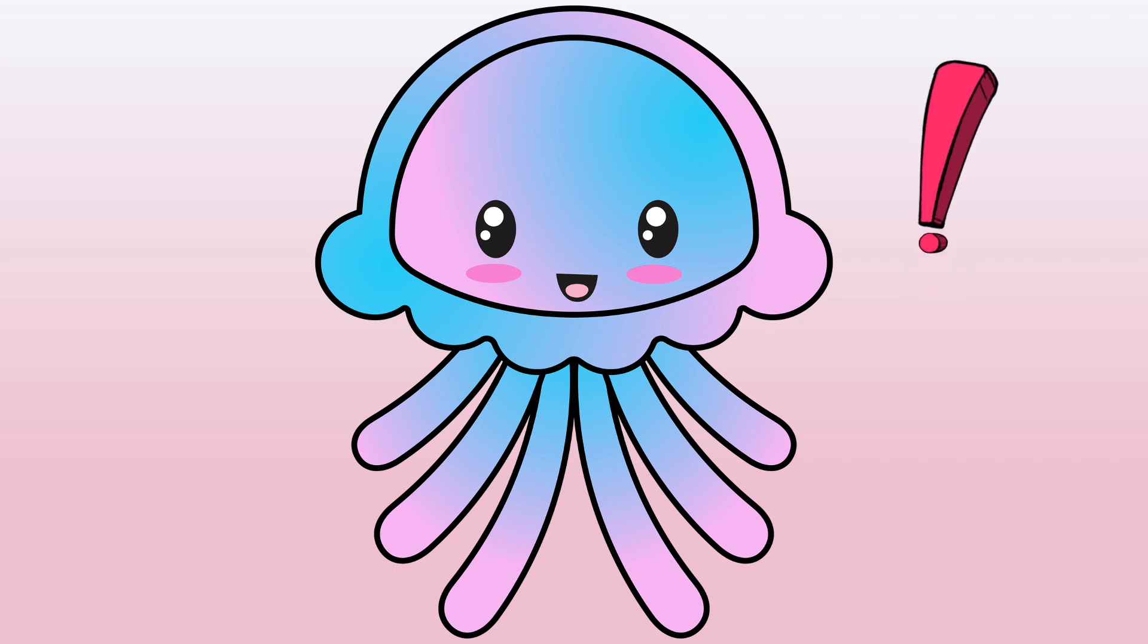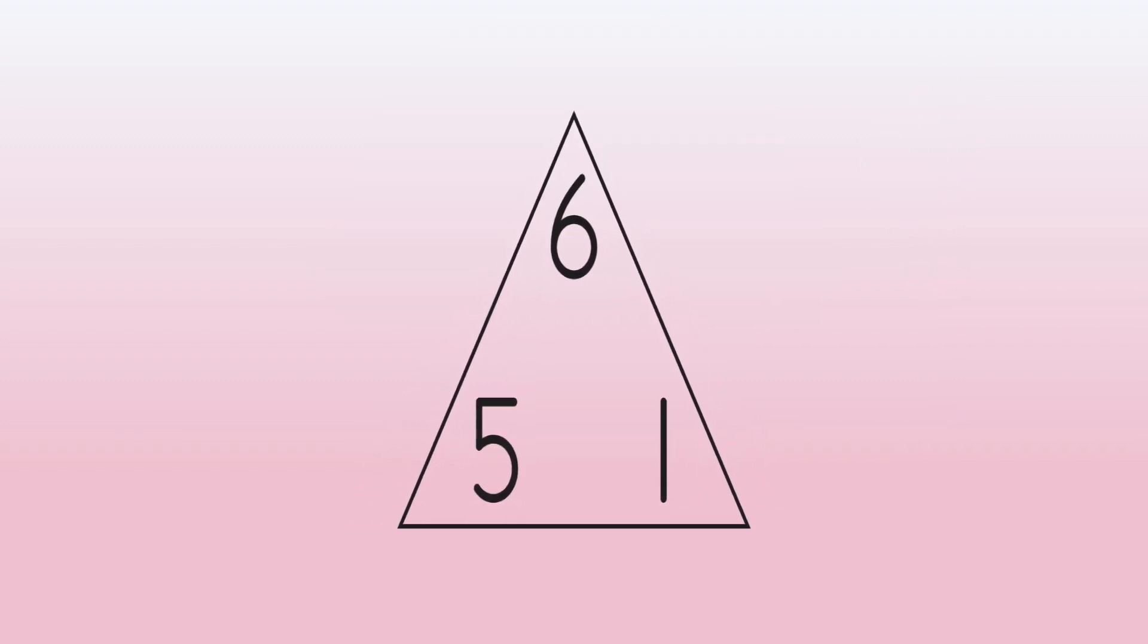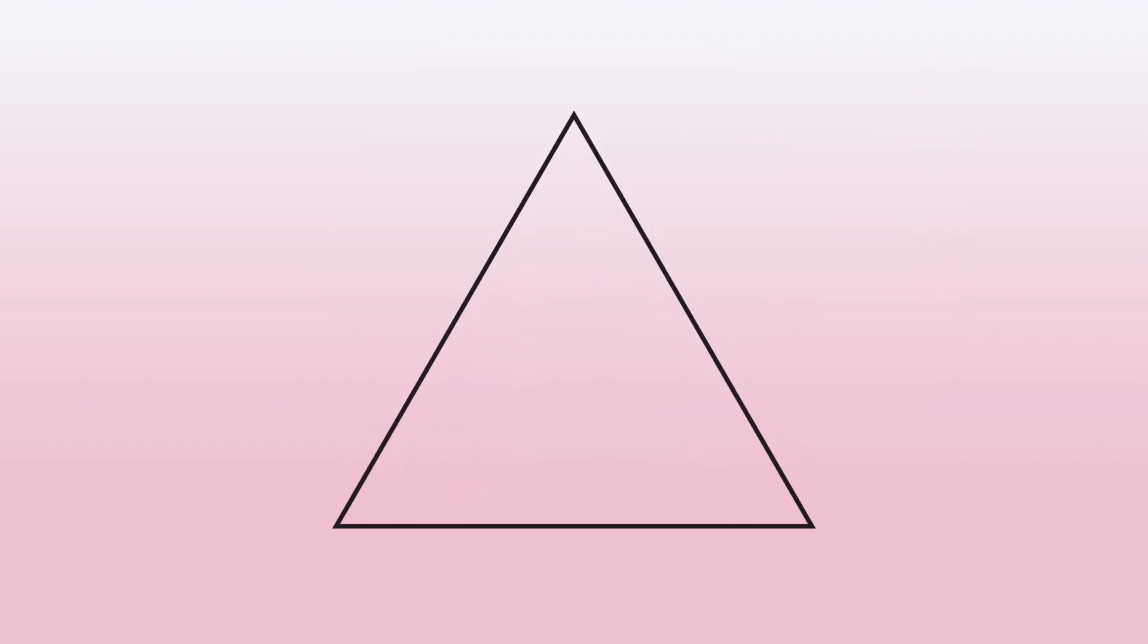To start, we can set up a fact family triangle. We'll start with a blank triangle. Today, we'll use the numbers 5, 1, and 6 to start listing addition and subtraction facts.